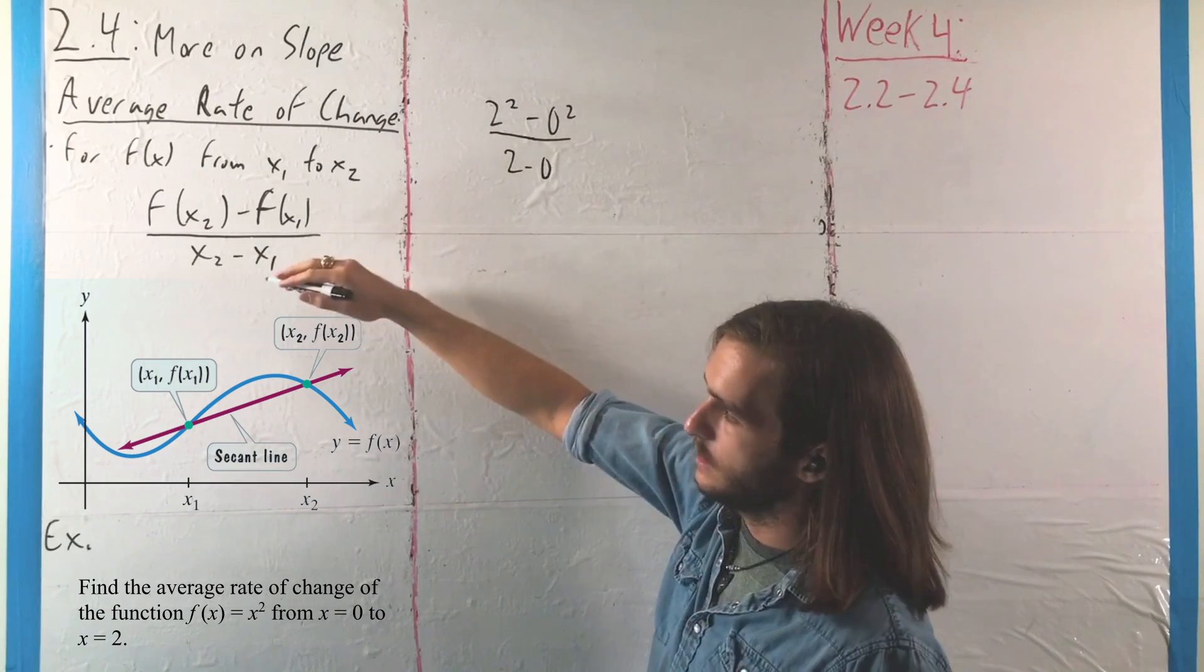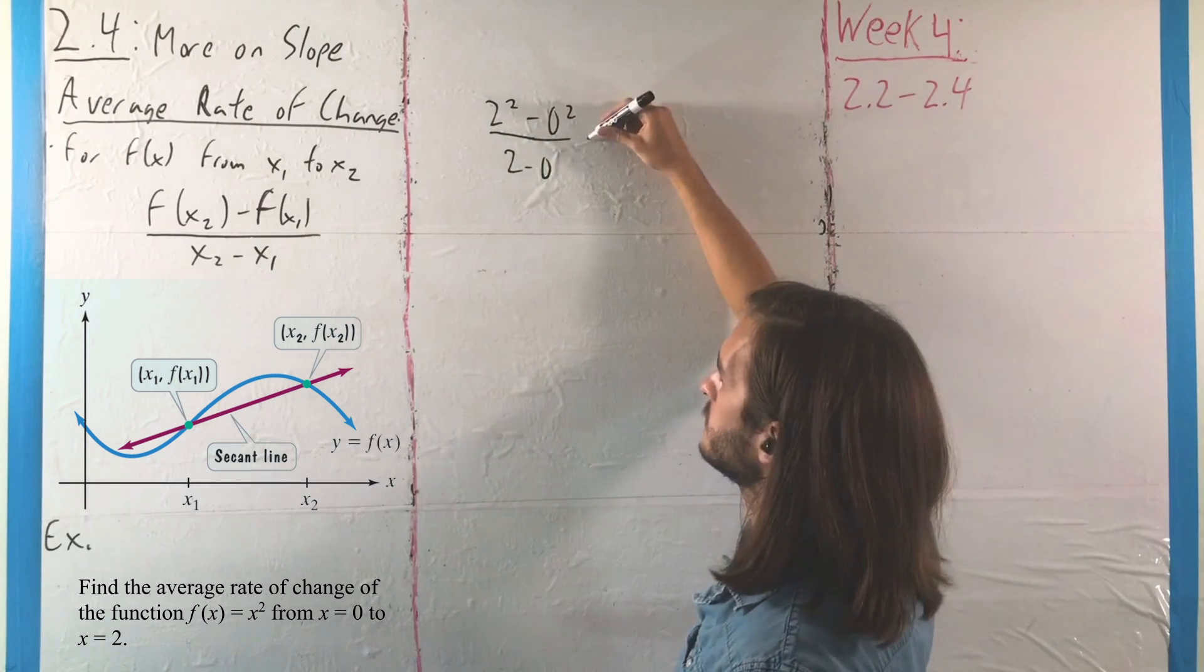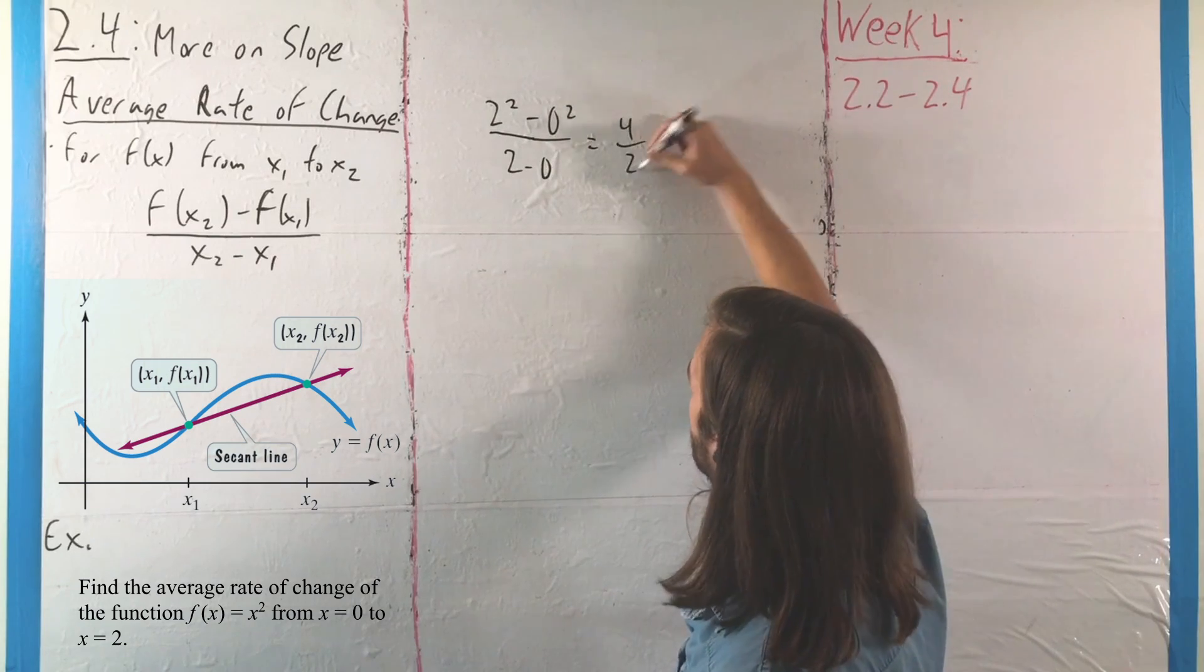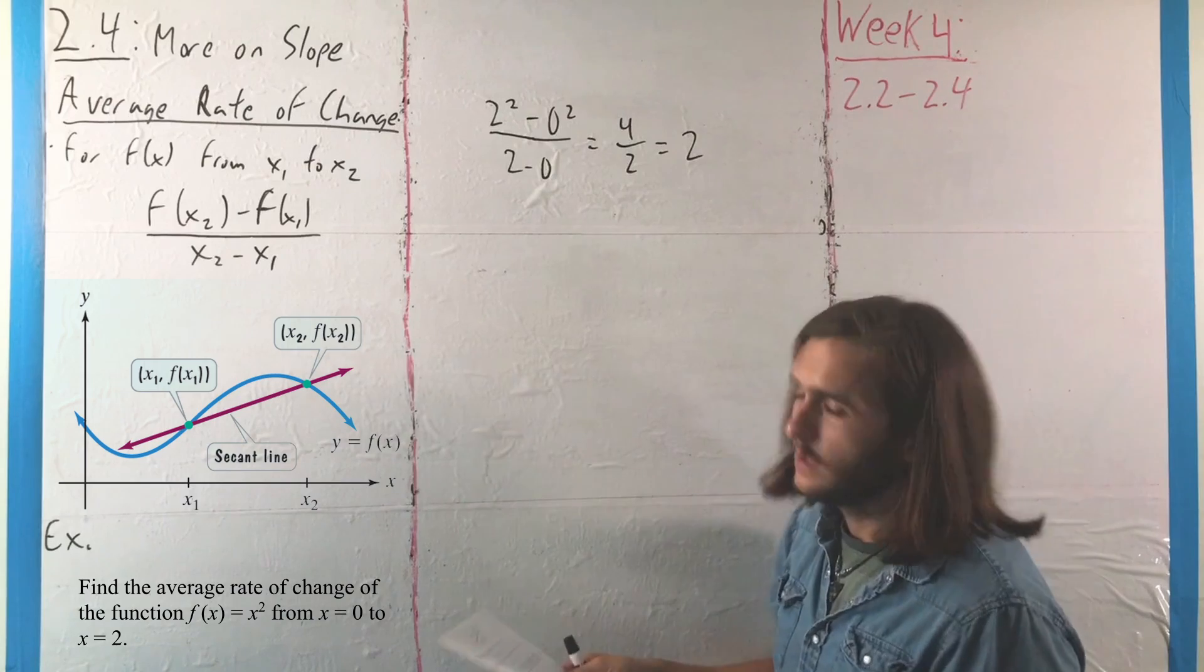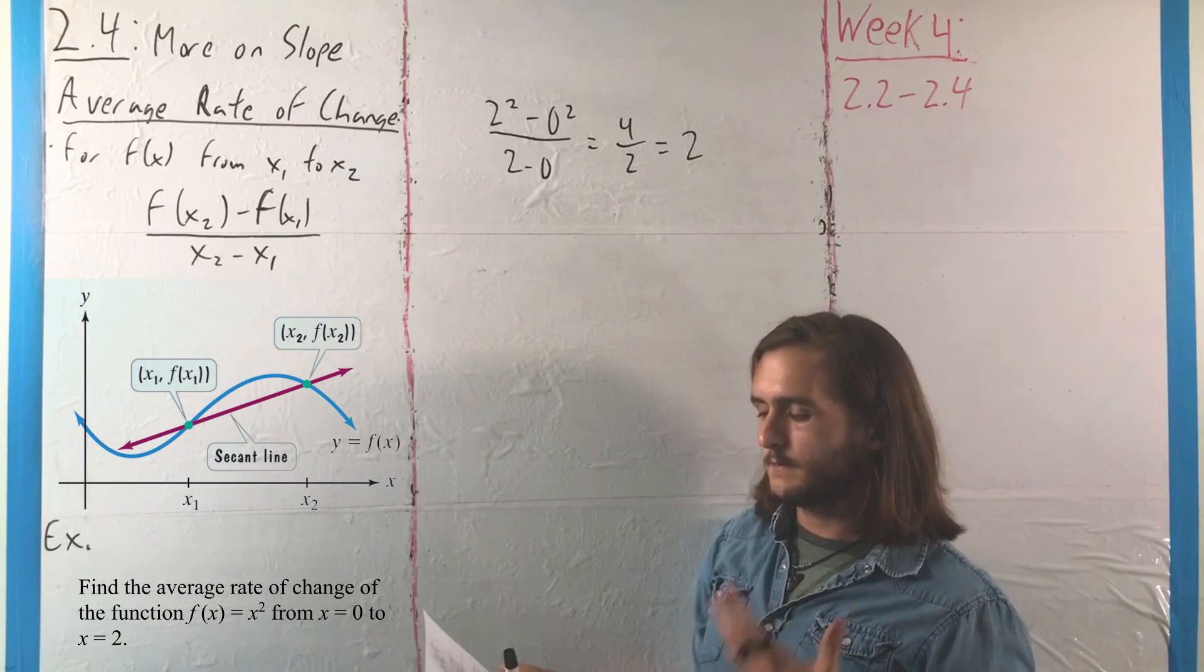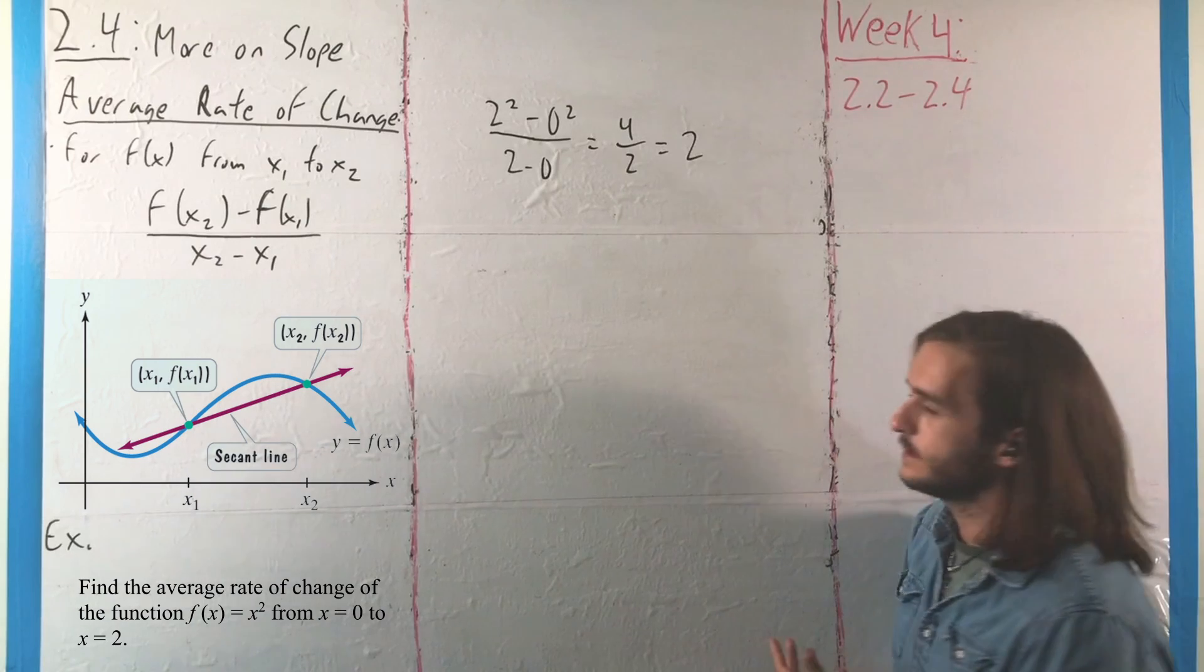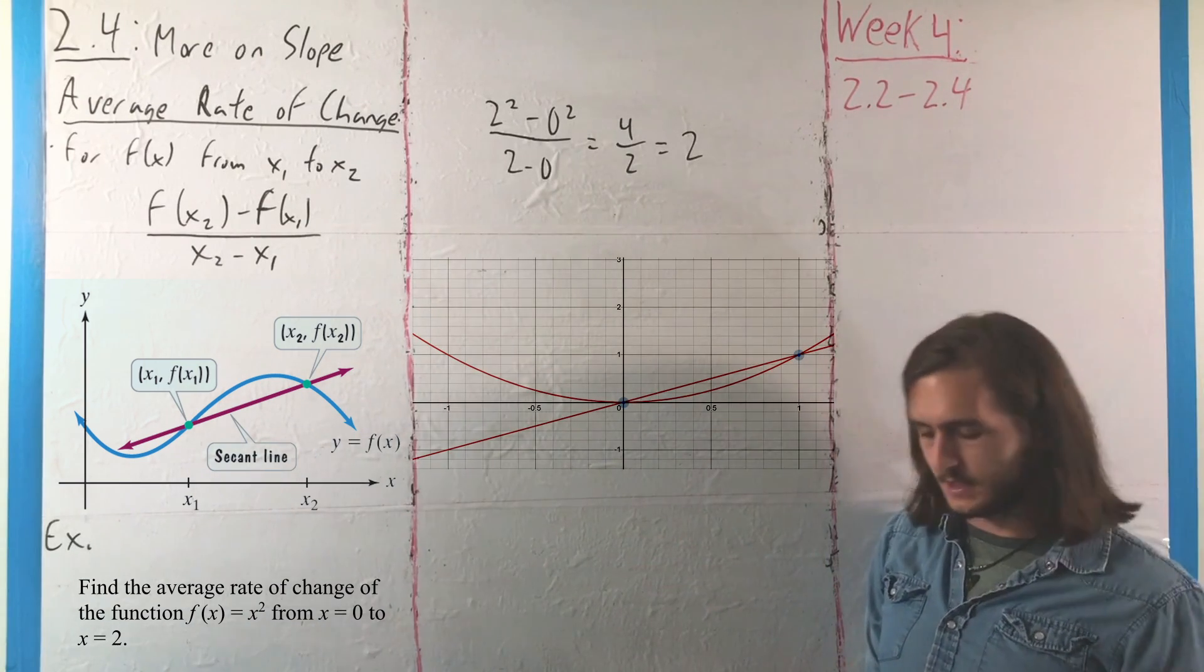f(x) is x². x is 2 and 0. So we end up with 4 over 2, or we have 2. That is to say, we get that the average rate of change, the slope of the secant line from 0 to 2 for our function is going to be 2. And if you want a picture of what's going on there, it might look something like this.